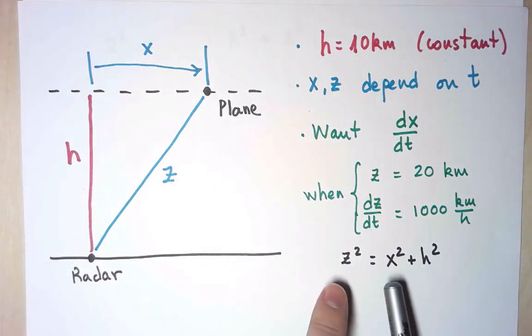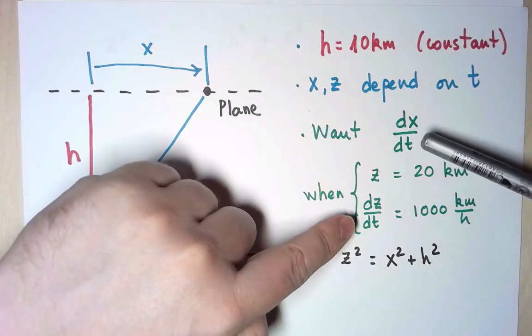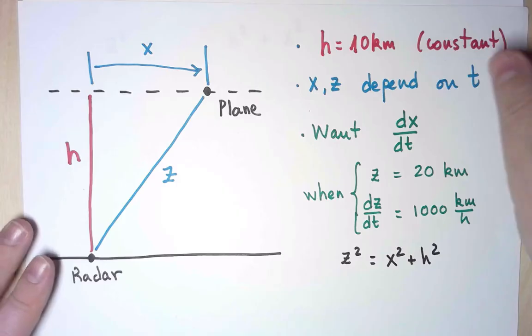Luckily, I have a relation between z and x. If I take the derivative with respect to time of both sides, I will get that relation between the two derivatives I need. And that's exactly what I'm going to do.